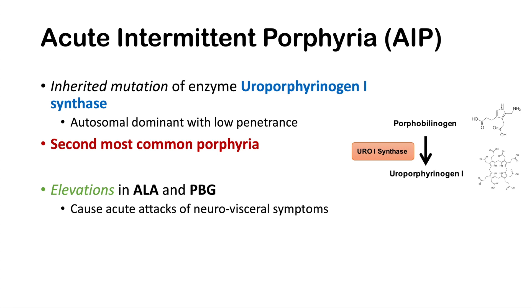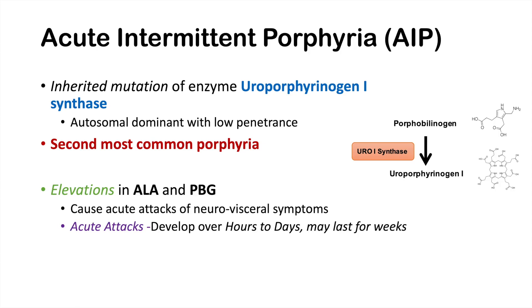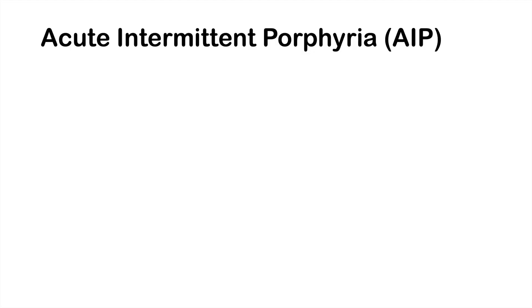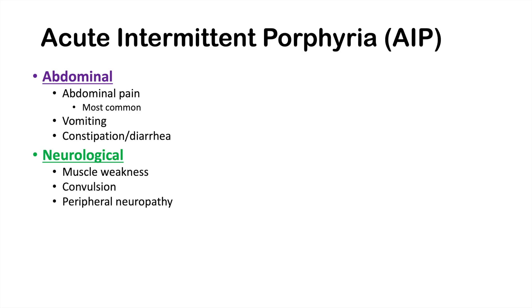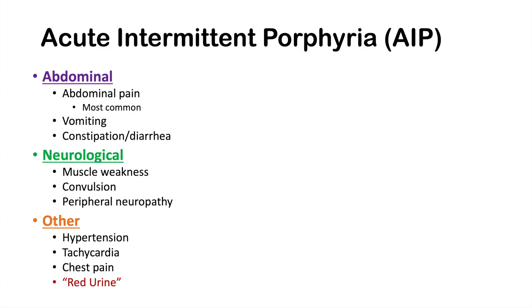ALA and PBG accumulations cause acute attacks of neurovisceral symptoms. These acute attacks can develop over hours to days and may last for weeks. Abdominal symptoms include abdominal pain — the most common — as well as vomiting, constipation, and diarrhea, with constipation more common than diarrhea. Neurological symptoms include muscle weakness, convulsions, and peripheral neuropathy with sensory loss. Other signs include hypertension, tachycardia, chest pain, and red urine.